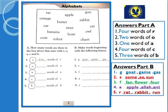Ab humne isme karna kya hai — toh chalen hum Part A ko dekhte hain: how many words are there in the box that start with R, O, A, C, and B? Ab baccho, humne un words ko select karna hai jo R, O, A, C, and B ke saath start hote hain. Agar dekhen R ke words ko — rat, rabbit, river, aur robot. Toh how many words? Four words of R.